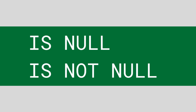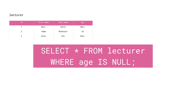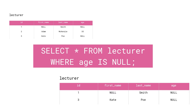If equals and not equal to don't work, what can we do to filter on Nulls? We need to use special keywords — IS NULL or IS NOT NULL. Again, we want to look for Lecturers that do have a Null in the age column, so we use: SELECT * FROM Lecturer WHERE age IS NULL. We can see two Lecturers in the result set — Smith and Poe. We are missing Adam McKenzie, as he did have an integer value in the age column — he is 35 years old, so he's not shown.